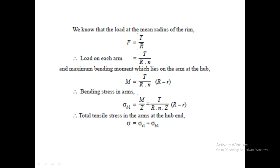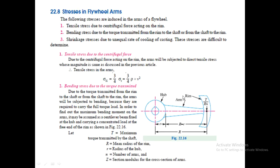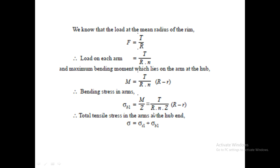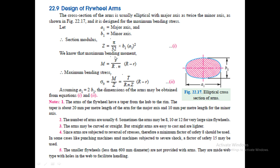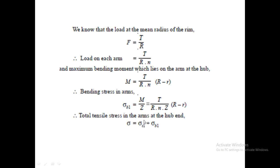The maximum bending moment is T/(R·n) × (R − r). The bending stress σ_b1 = M/Z, where the section modulus for an elliptical cross-section is Z = (π/32)·b1·a1², with major axis a1 and minor axis b1. Generally the major axis is taken as twice the minor axis. Substituting, we get the maximum bending stress σ_b1. The total stress in the arms is σ_t1 + σ_b1, excluding shrinkage stress.